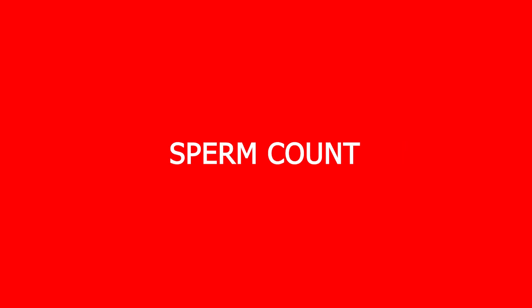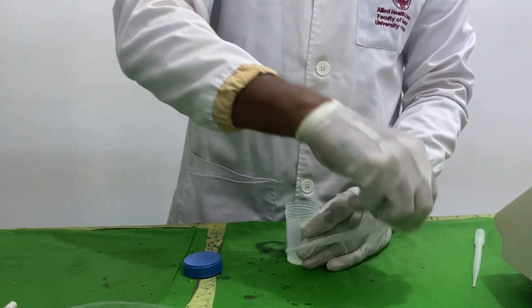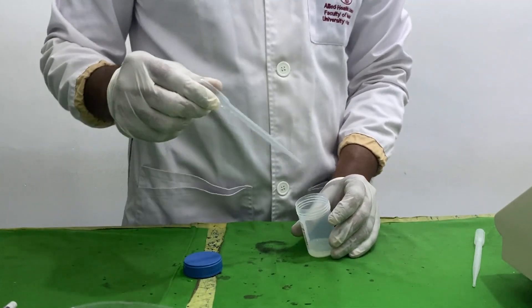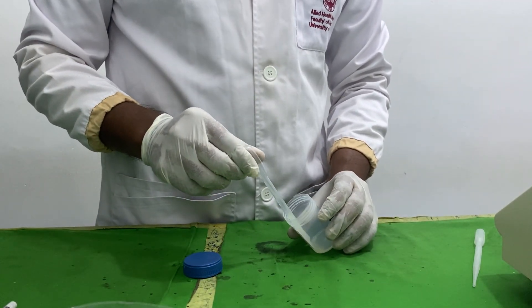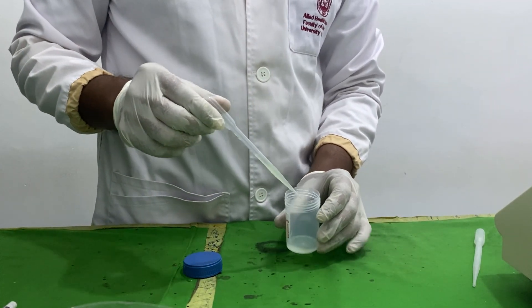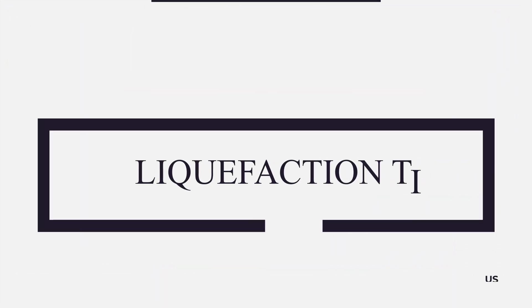Additional parameters include sperm viability, sperm morphology, sperm count, and fructose content. In this video, we'll be performing semen analysis of human semen based on these previously mentioned parameters.